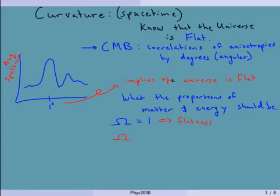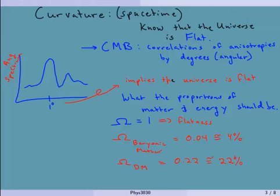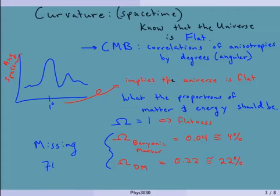If I look at all of baryonic matter — remember, baryons are things with nuclei — this only makes up 0.04 of that one, which is equivalent to 4%. This is all of the baryonic matter that we ever see. And if we count in dark matter, we get another big chunk — that's 0.22, correlating to about 22% of all the stuff in the universe. But if I add those together, we're still missing about 74% of the energy density that we need for flatness.